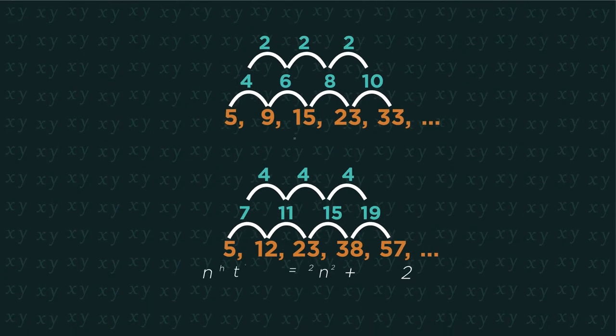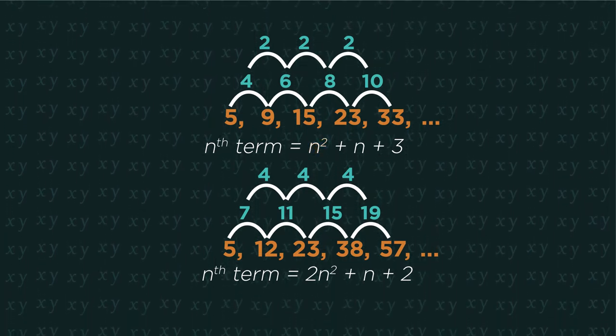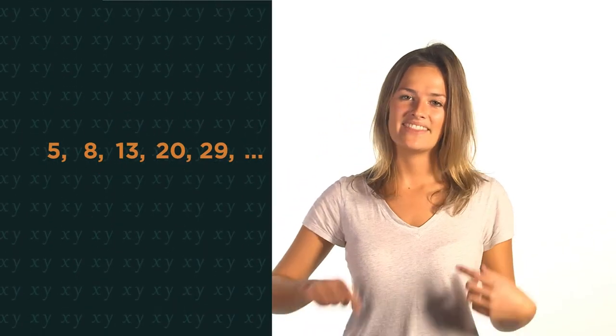This means it contains an n squared term. So let's have a look at how to find the nth term of quadratic sequences.